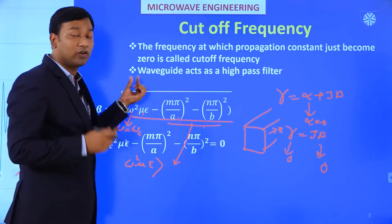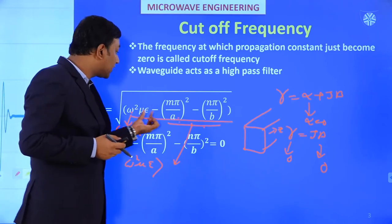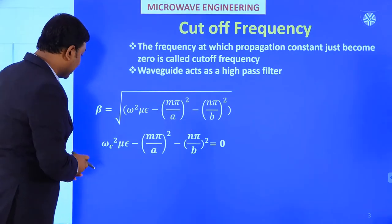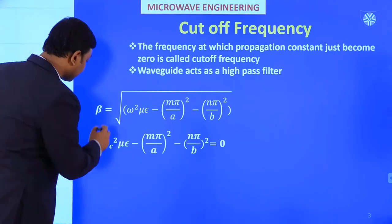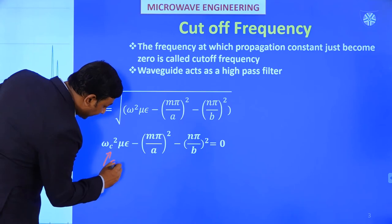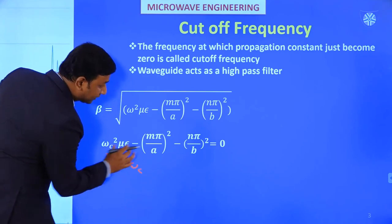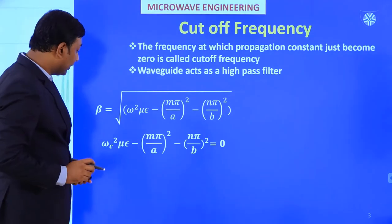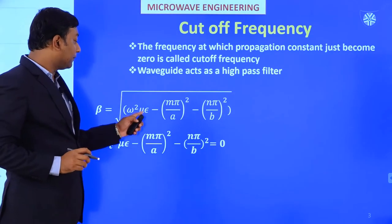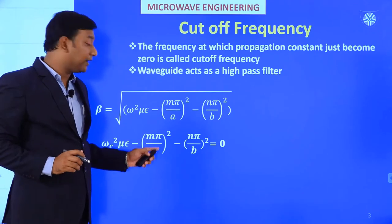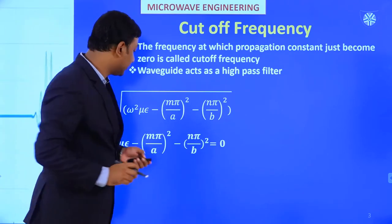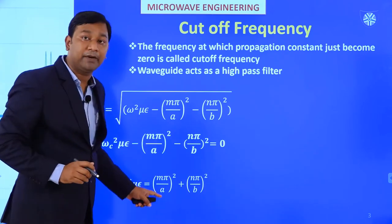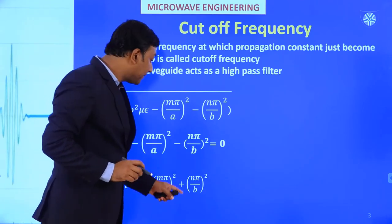For wave propagation, ω²με must always be greater than (mπ/a)² + (nπ/b)². At ω = ωc, setting the propagation constant to zero: ωc²με - (mπ/a)² - (nπ/b)² = 0. So ωc²με = (mπ/a)² + (nπ/b)².